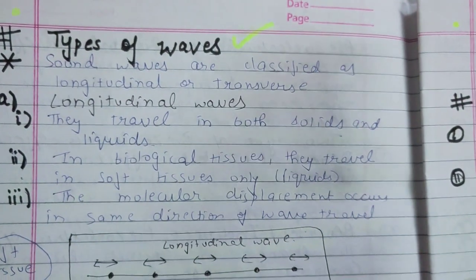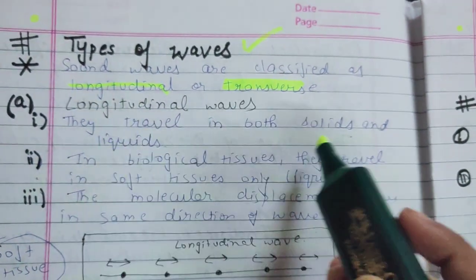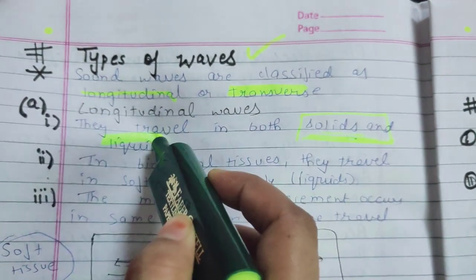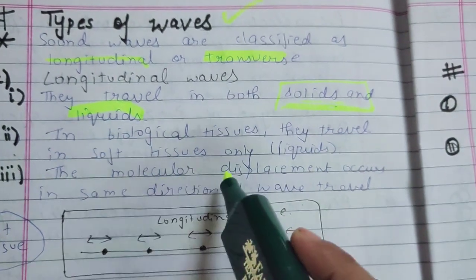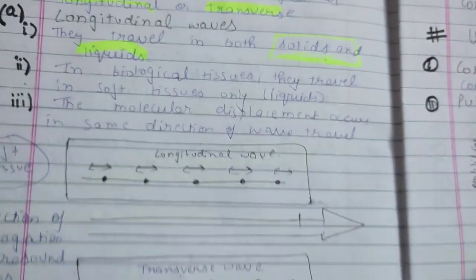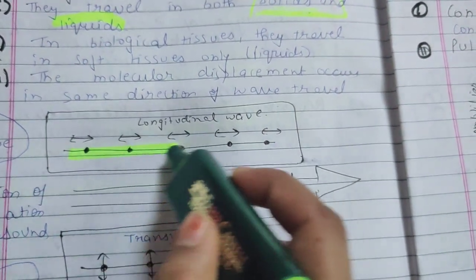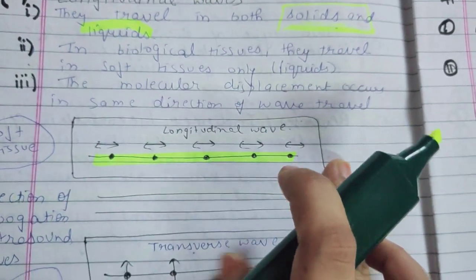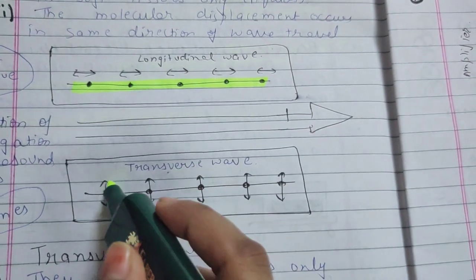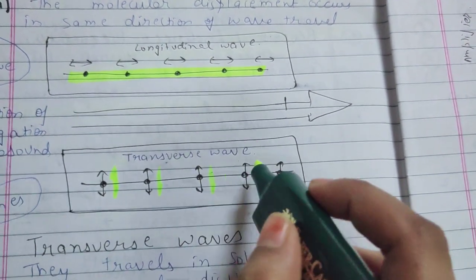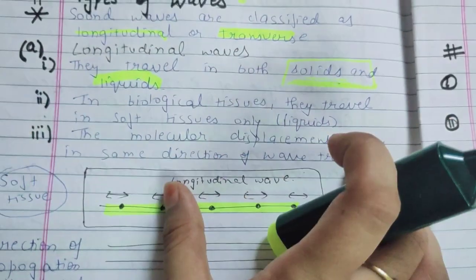If we classify sound waves, there are longitudinal and transverse waves. Longitudinal waves travel in both solids and liquids. In biological tissues, they travel in soft tissues only — such as muscles and liquid — where the molecular displacement occurs in the same direction as wave travel. In soft tissue the wave direction is longitudinal, while in bone the wave is transverse. Try to remember this diagram.